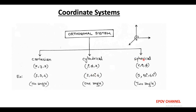In spherical coordinate system, the coordinates are r, theta, and phi. Here, r is the radius of a sphere and there are two angles: theta and phi. When we compare Cartesian and cylindrical coordinate systems, z is common, while in case of cylindrical and spherical, phi is a common coordinate.